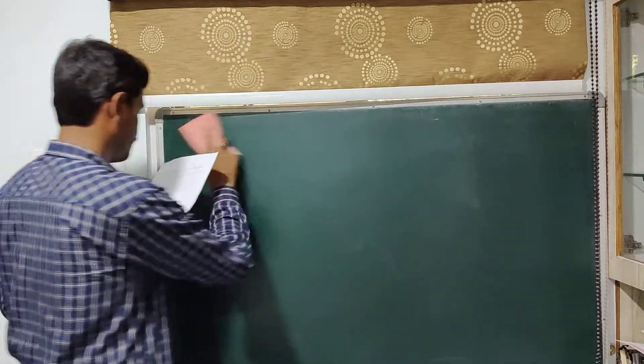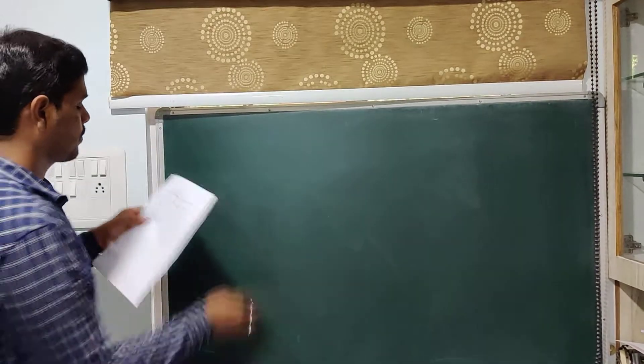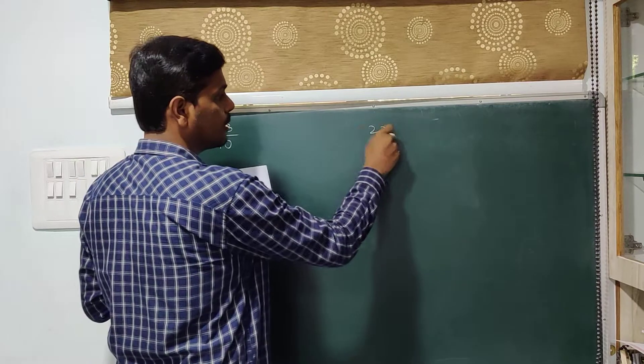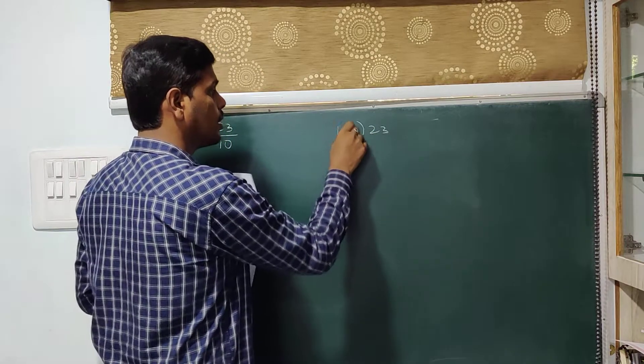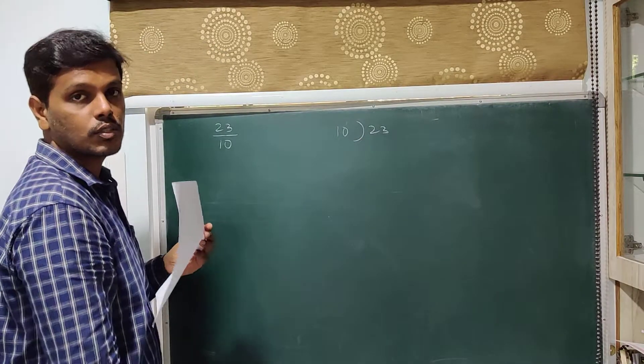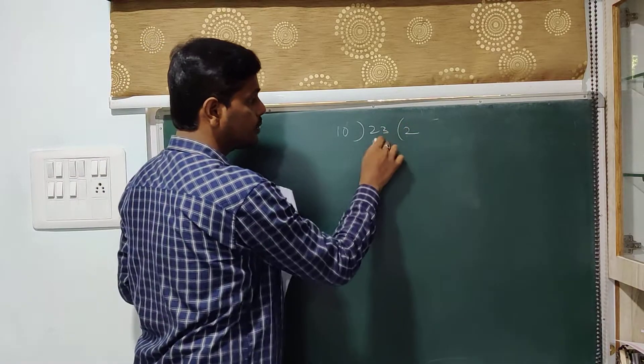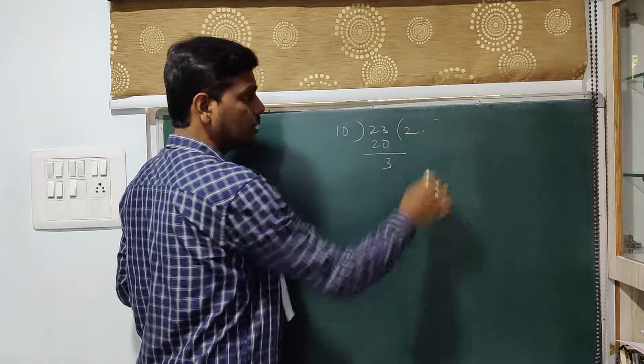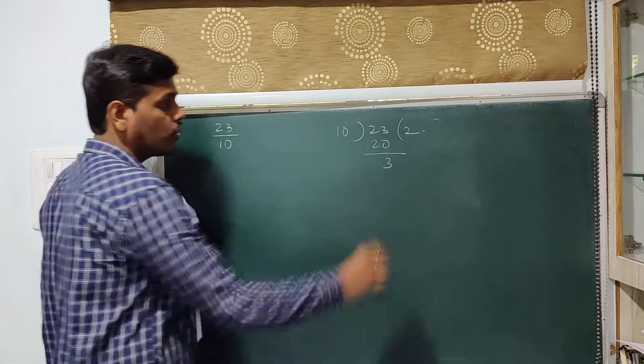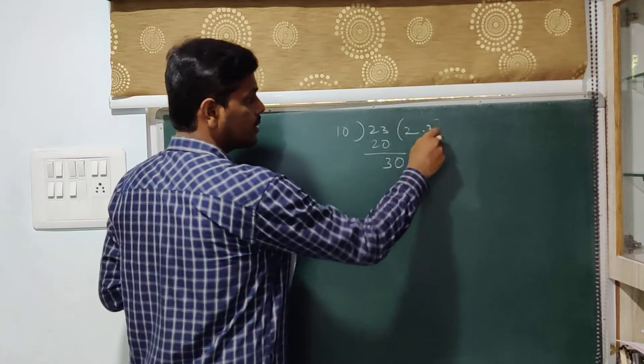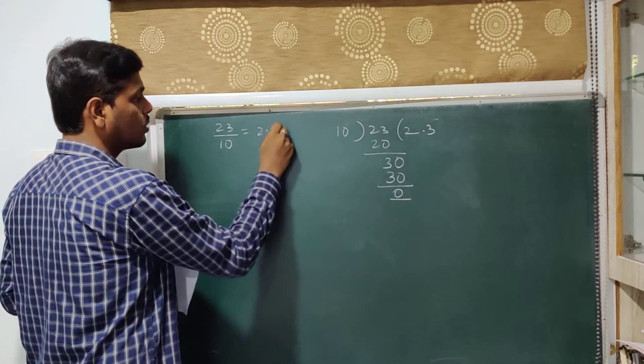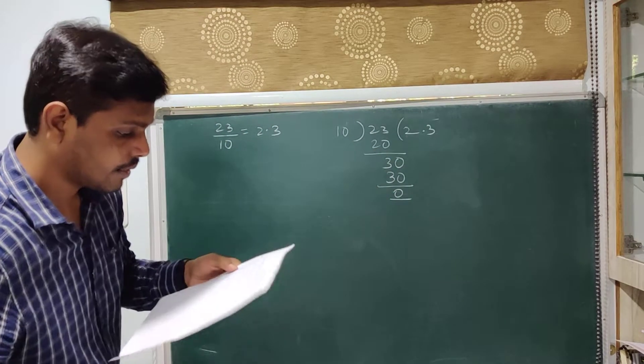Next, 23 by 10. So 23 in the numerator is your dividend and 10 in the denominator is your divisor. 2 times 10 is 20. Left over is 3. 3 is less than 10. So take a decimal point. When you take a decimal point you can take 0. Then 3 times 10 is 30. So this is 2.3.